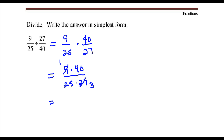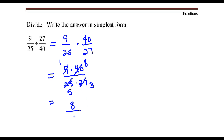Five goes into forty eight times and goes into twenty-five five times. Then we just go ahead and write what we have left over: in the numerator we have one times eight, and in the denominator we have five times three. And that's it.